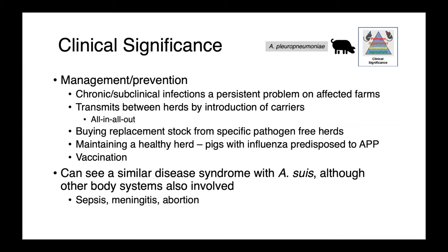Managing APP in pig production systems can be quite challenging. Chronic and subclinical infections are a persistent problem and lead to ongoing transmission. Management strategies include all-in all-out protocols, ensuring replacement stock is bought from specific pathogen-free herds where possible, maintaining a healthy herd, and reducing the burden of other illnesses that will immunosuppress pigs — such as preventing influenza infections and vaccinating for other pathogens. It's important to know that a clinically similar syndrome can be seen with Actinobacillus suus, although these cases typically involve other body sites — animals are generally septic and may show meningitis or abortion in addition to respiratory signs.